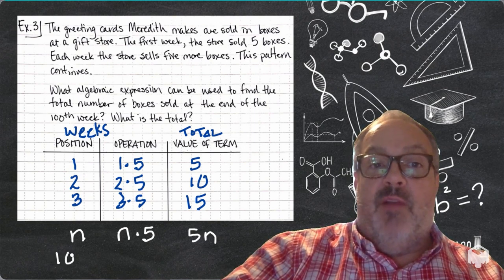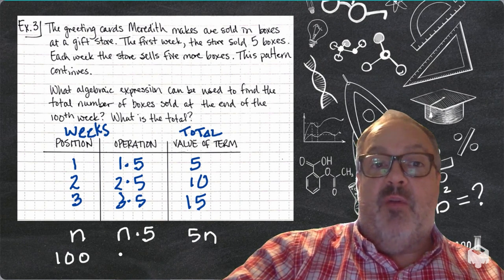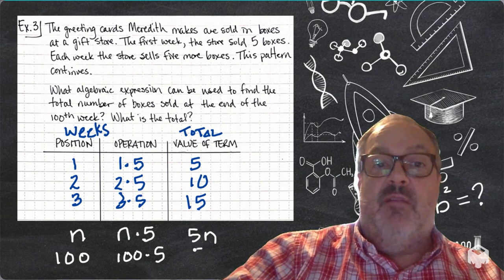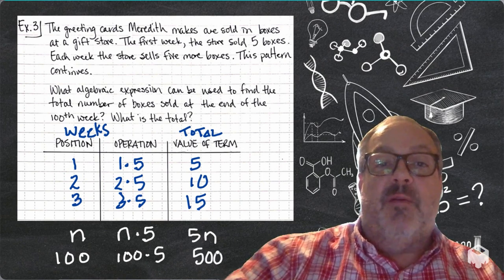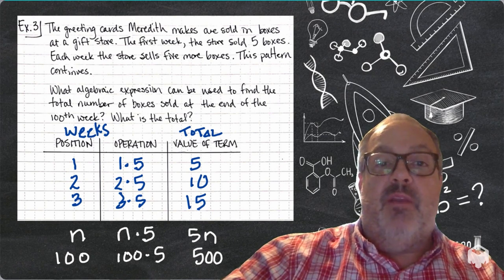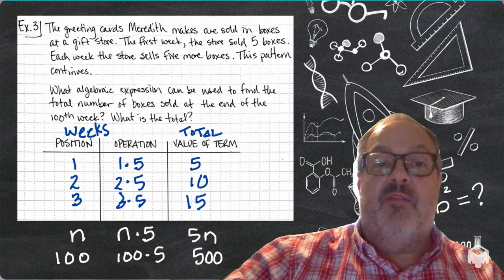So, if I want to find out how many boxes are sold in the hundredth week, I can think of it as 100 times five, or 500. So, at the end of the 100th week, Meredith would have sold 500 boxes.